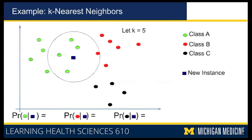You find the probability of the label being red by seeing how many of the five neighbors are red, and the probability of the label being black based on how many of the five nearest neighbors are black. In this case, there are four green neighbors, one red neighbor, and zero black neighbors. So the probability of green is 4/5, the probability of red is 1/5, and the probability of black is 0/5. The majority class is green, and hence the label assigned to this new instance is green.